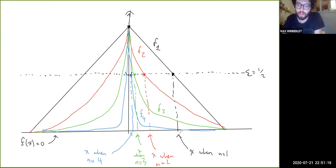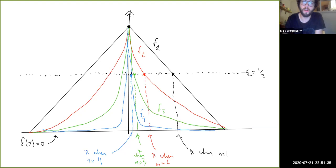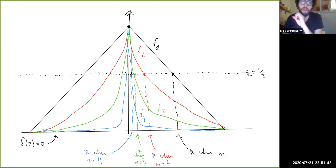We also could have picked any value of x between zero and the intersection point — any value that makes f2, f3, or f4 bigger than one-half also works. But you can see from the picture that it can't converge uniformly because there's never a point at which the graphs stay entirely inside this band — they always end up coming out. So that's a sequence that doesn't converge uniformly.